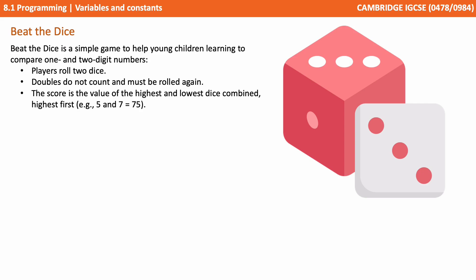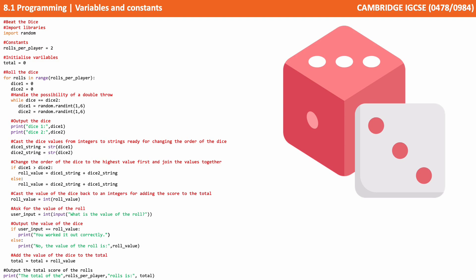We're going to look at some real Python code now, based around a simple game called Beat the Dice. It's a game where we compare one and two-digit numbers. The player rolls two dice — doubles do not count and must be rolled again. The score is the value of the highest and lowest dice combined with the highest first. So if we rolled a 5 and a 7, the output value would be 75. Here's the actual Python code — let's see if we can spot instances where variables and constants are being used.